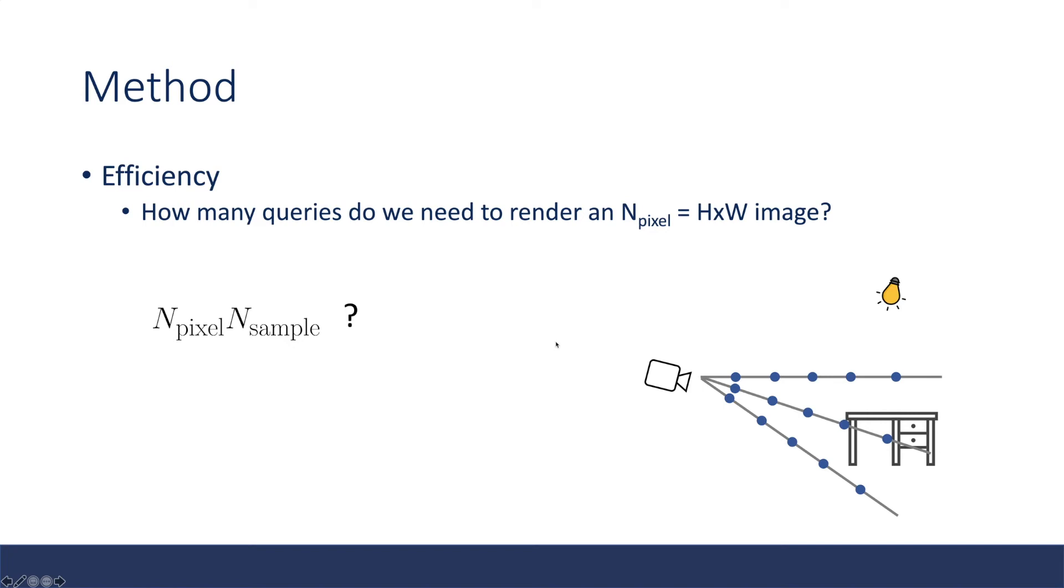But here comes a question. How many queries do we need to render an image? Is it efficient? For NERF, we need the number of pixels times the number of sample points along the ray. But is this the same for neural reflectance field? Actually, it is not. Because we also need to compute the visibility of the light source.